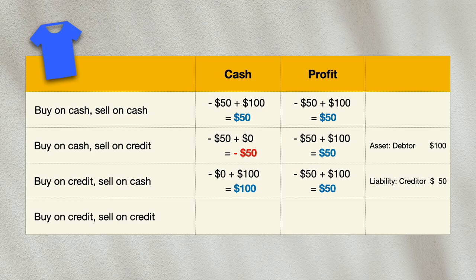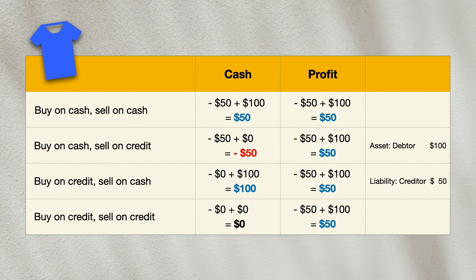Finally, let's look at a situation where we buy and sell the t-shirt on credit. This will result in no cash flow at all, despite the fact that a sale has been made. Therefore, we will report a profit of $50 generated, and at the same time there will be an asset of $100 representing the amount owing from the debtor, and a liability of $50 representing the obligation to pay the creditor for the t-shirt.